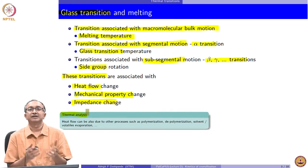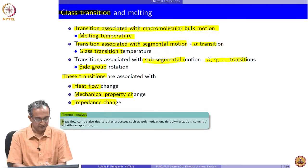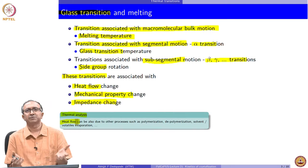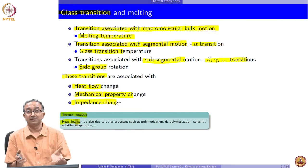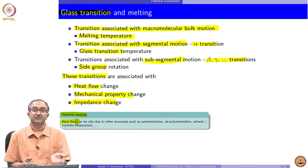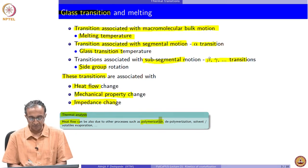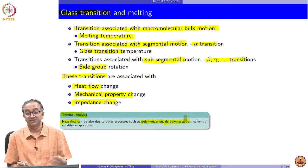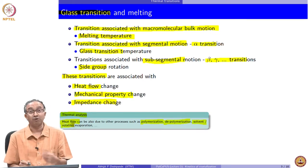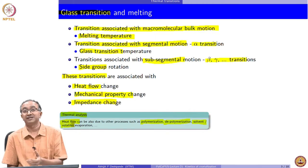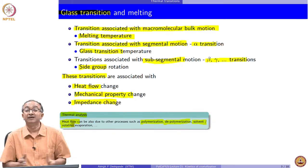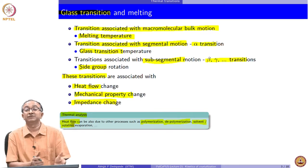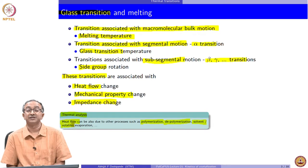One technique is thermal analysis, in which we look at the thermal events in the macromolecular system and the signatures associated with them. Heat flow in DSC can be a good signature for these transitions. Of course, when we look at a practical polymeric system, there may be other events happening alongside these thermal transitions — for example, polymerization, depolymerization, degradation reactions, or evaporation of solvent or small molecules — so a real polymeric system may have several signatures associated with heat flow that we might have to de-link.